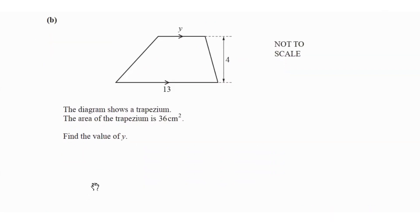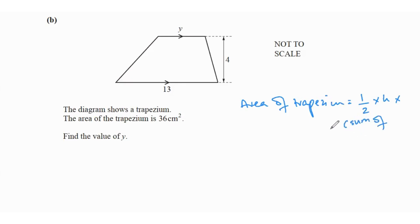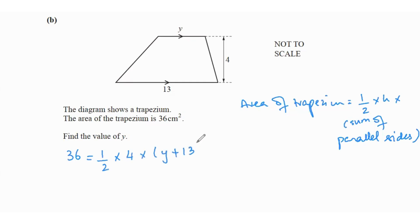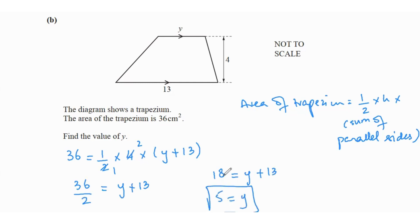Area of trapezium: the diagram shows a trapezium with area 36 cm². Find the value of y. The formula is: area = ½ × height × sum of parallel sides. The parallel sides are y and 13, and the height is 4. So 36 = ½ × 4 × (y + 13), which gives 36 ÷ 2 = y + 13, so 18 = y + 13, and y equals 5.